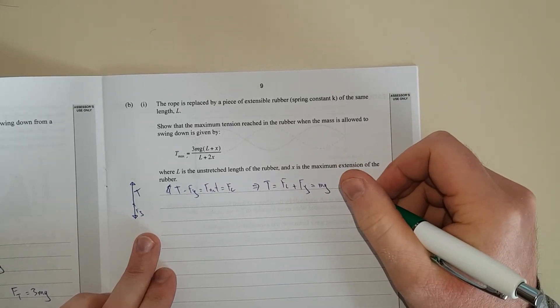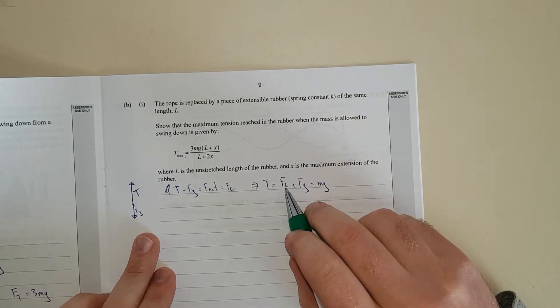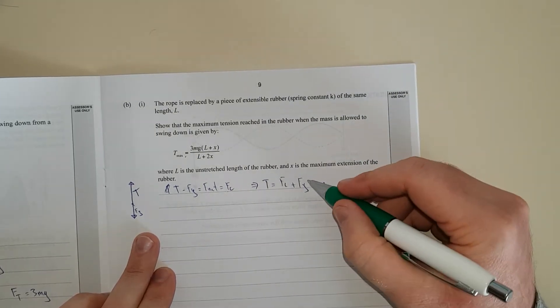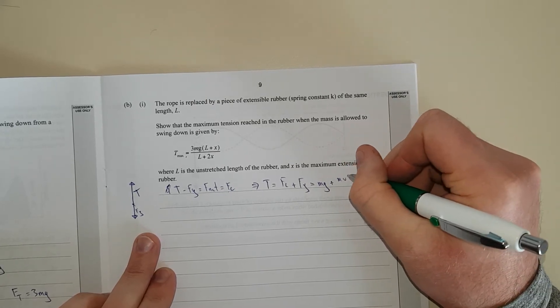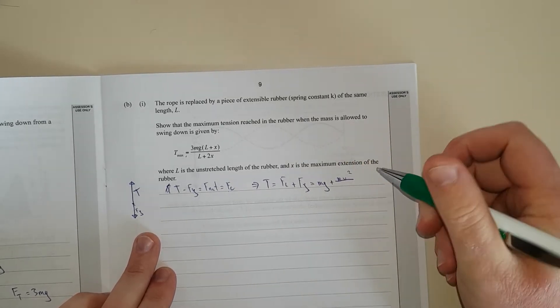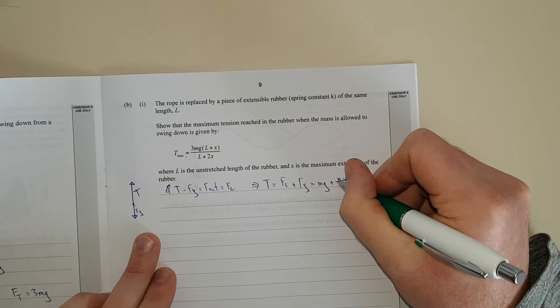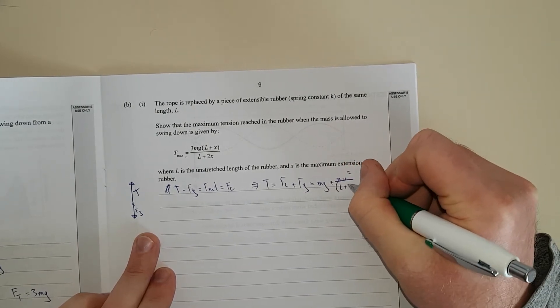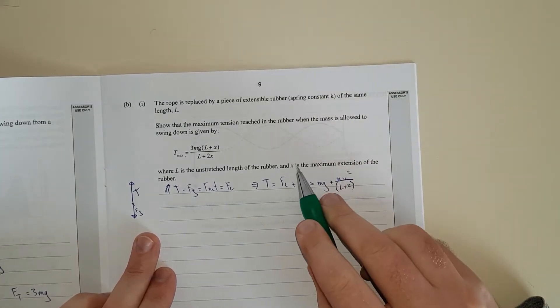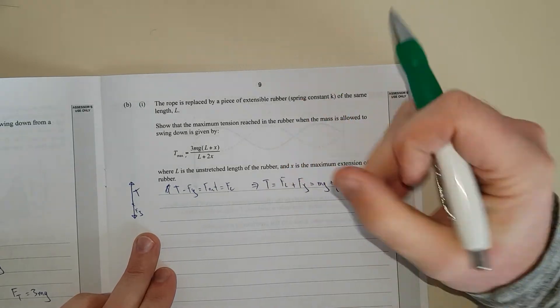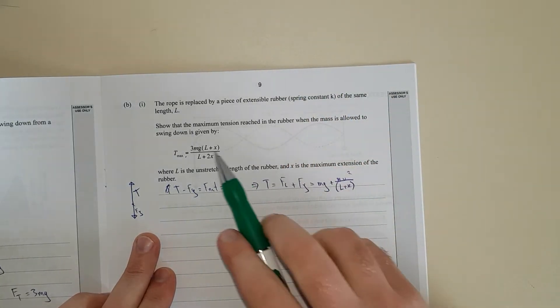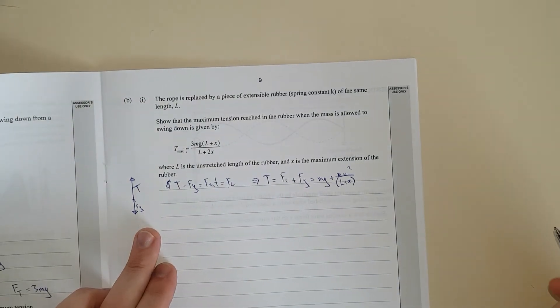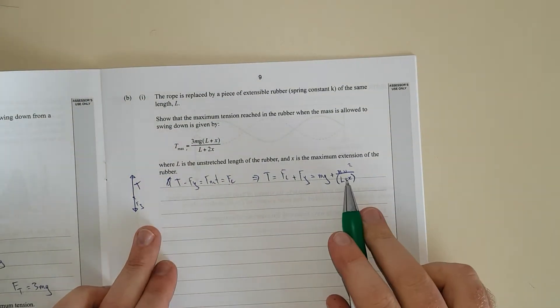That equals mg plus mv squared over, now the radius has changed. The radius has changed from L to L plus X because we've added a little bit extra, we've stretched down a little bit more, and that distance is X. And you can sort of see we've got brackets L plus X, that's probably going to come into here somewhere.